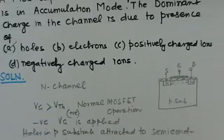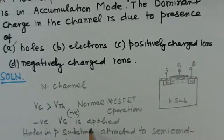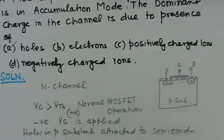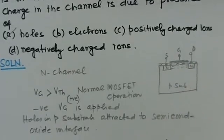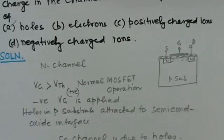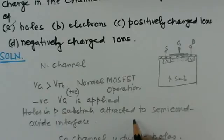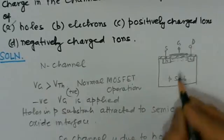In accumulation mode, we apply a negative voltage to the gate of the MOSFET. When we apply a negative voltage to the gate of the MOSFET, then the holes being the majority carrier in p-type substrate, they get attracted to the semiconductor oxide interface.